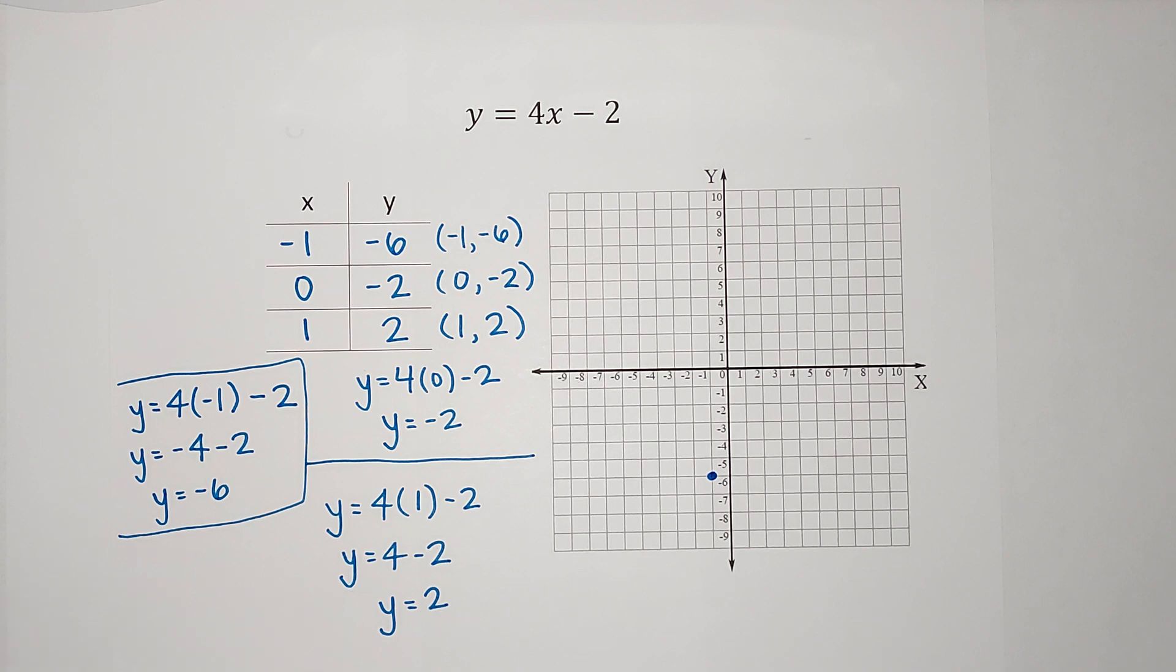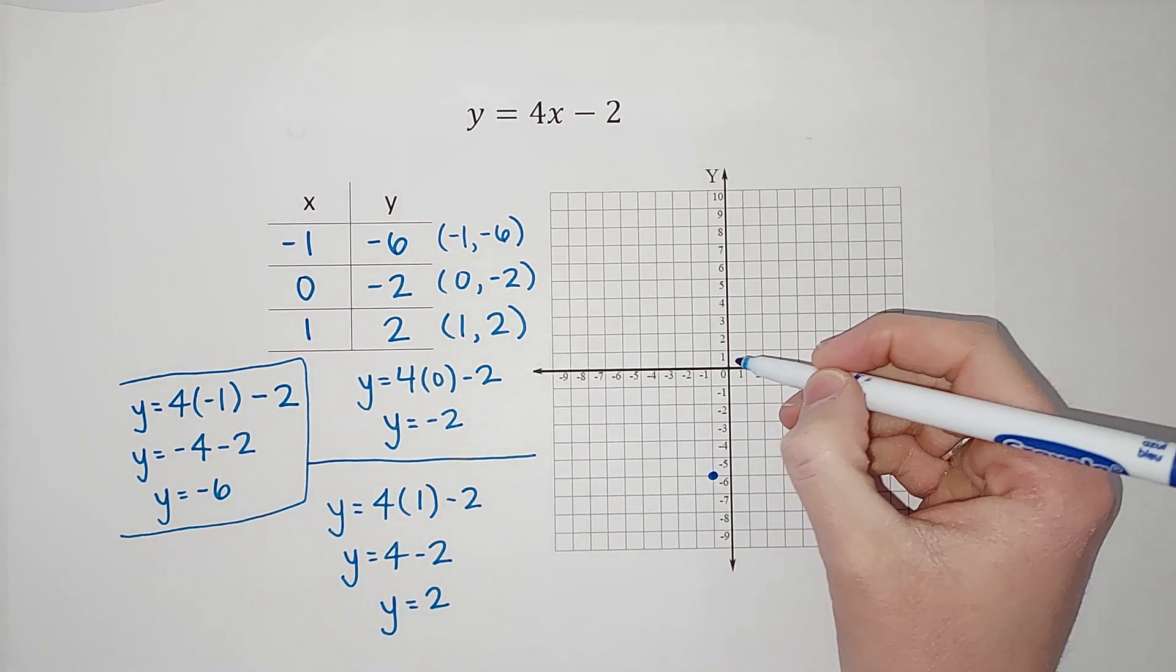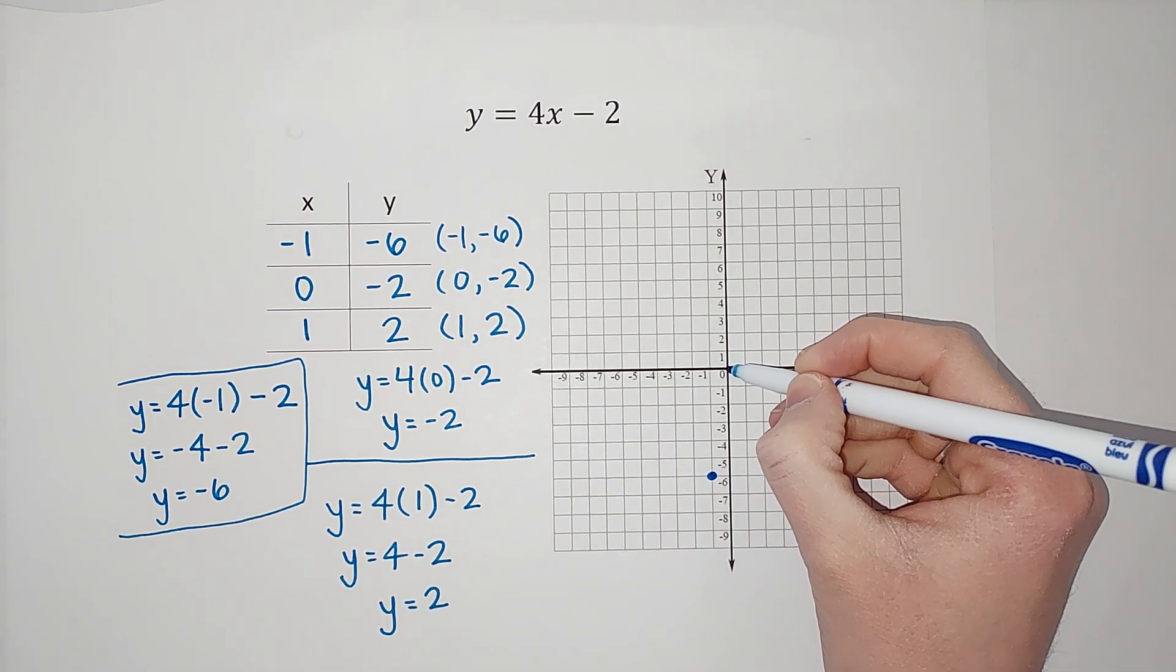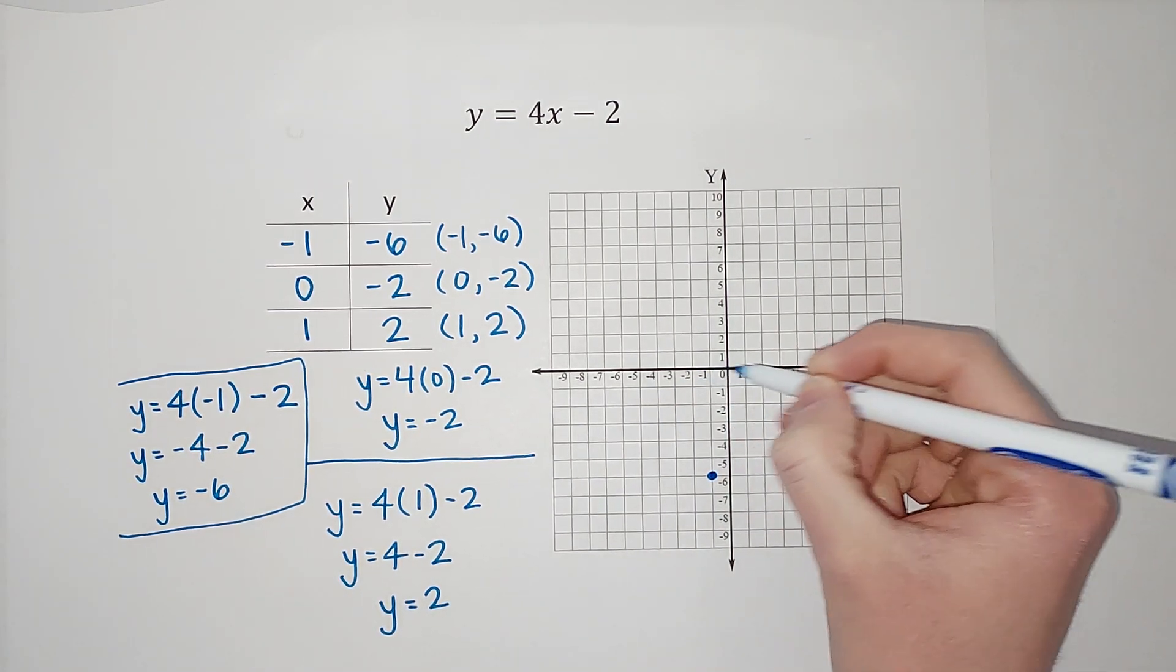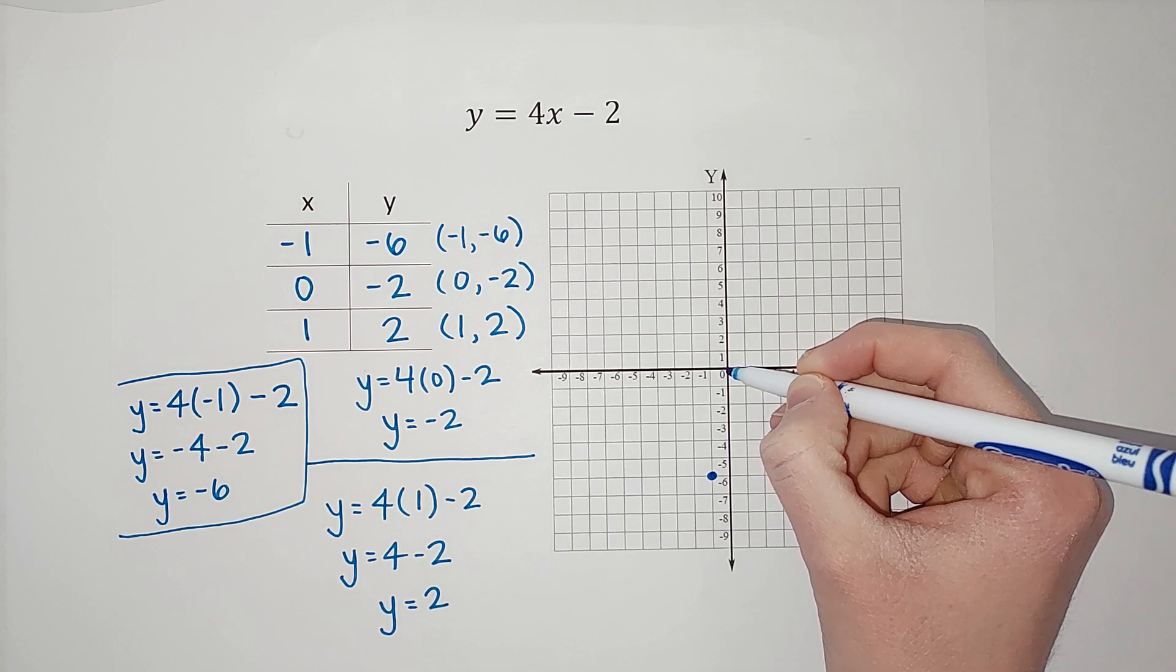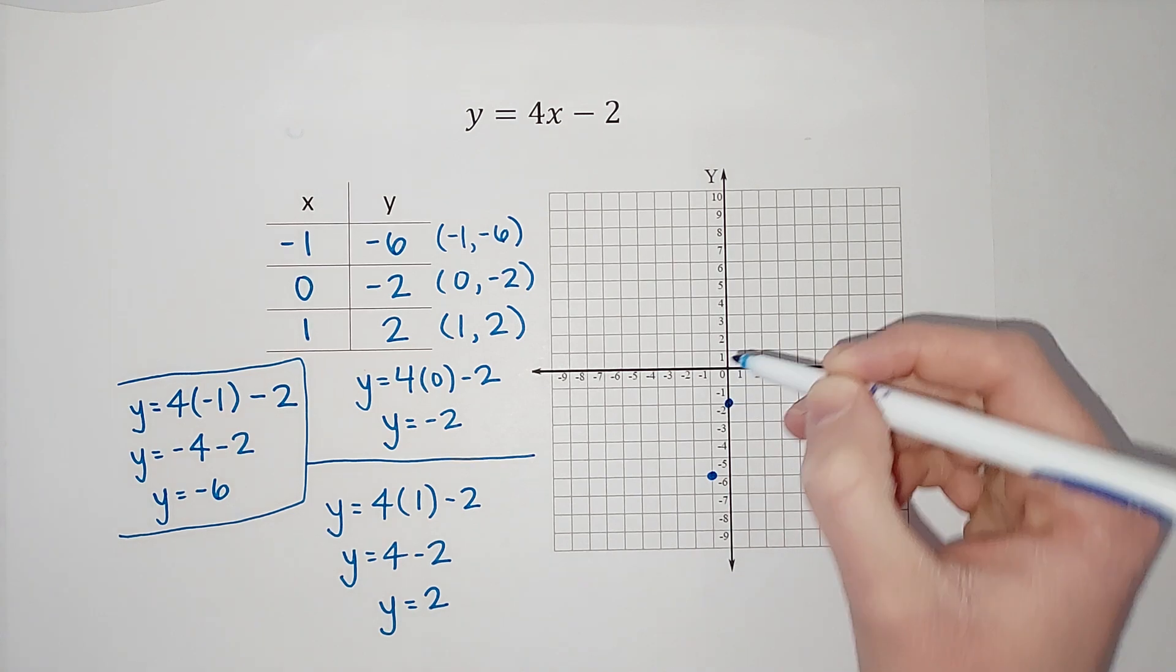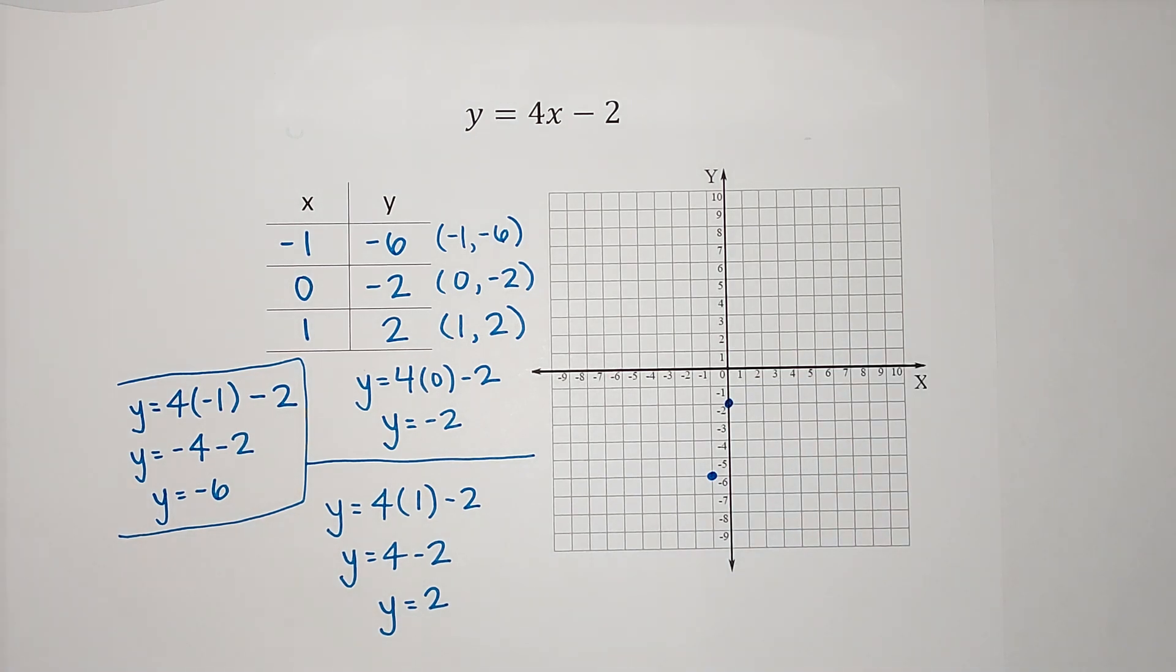Not on the line, but that I am graphing. 0, negative 2. So remember, we always start in the middle. The 0 means I'm going left and right 0. So I'm just staying there. And then y is negative 2. So I'm going down 2. In your future, we will call that the y-intercept.